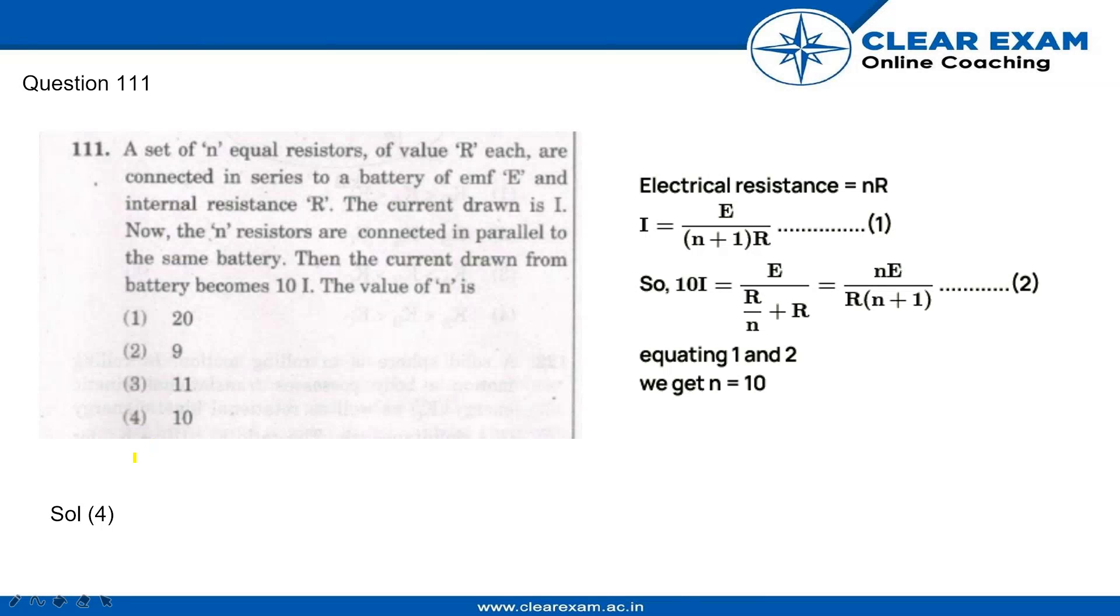Lead 2018 set GG v.111. A set of N equal resistors of value R each are connected in series to a battery of EMF E and internal resistance R. The current drawn is I. Now the N resistors are connected in parallel to the same battery. Then the current drawn from battery becomes 10 I.